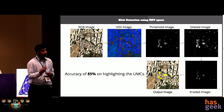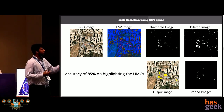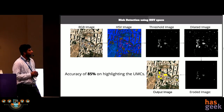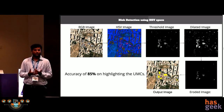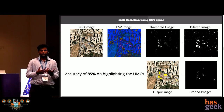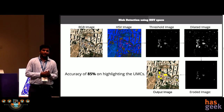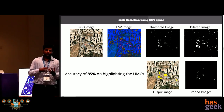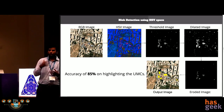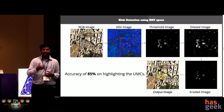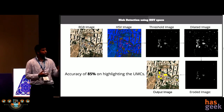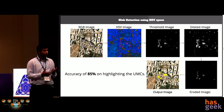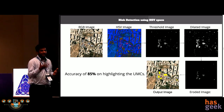Using the coordinates of these blobs, we mapped them onto the original image to show the presence of UMCs. This approach gave an accuracy of 85%, which was very good. However, the drawback is that it was not scalable — Pollinate Energy caters not only to Bangalore but also to Chennai, Mumbai, and Kolkata. Especially in Kolkata, the urban makeshift communities do not have a blue roof, so this particular approach was not scalable to other cities.